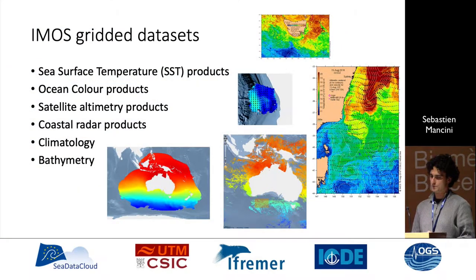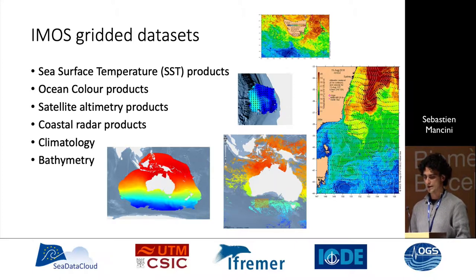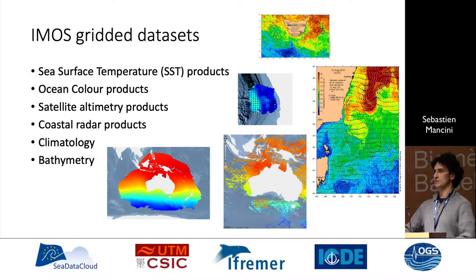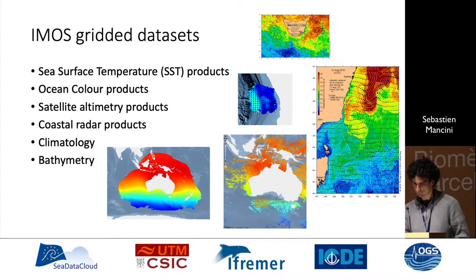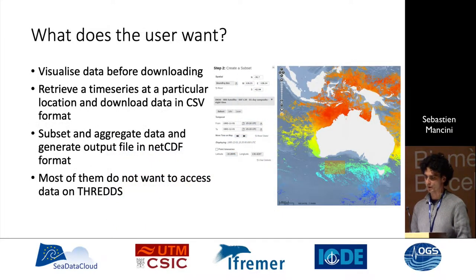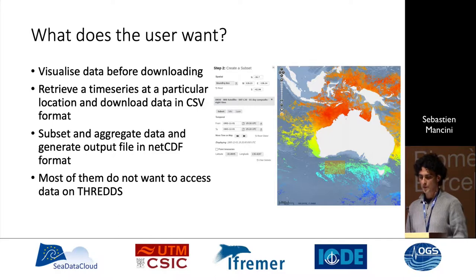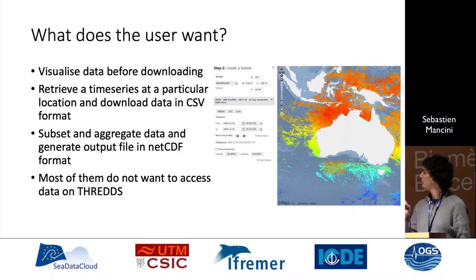Today we're going to focus mostly on the IMOS gridded dataset. We've got a range of data types that we provide: satellite SST sea surface temperature products, ocean color tailored to Australian waters, satellite altimetry, coastal radar products around Australia, and recently some climatology and altimetry products. What does our user want? Our users want to visualize the data before they download it, and to spatially and temporally filter the data. Recently, we've got a lot of users who just want to point at a location and say, I want 25 years of data at that location — can you give me that in CSV format?